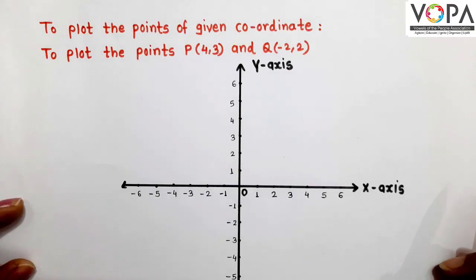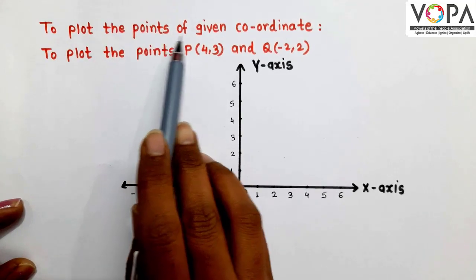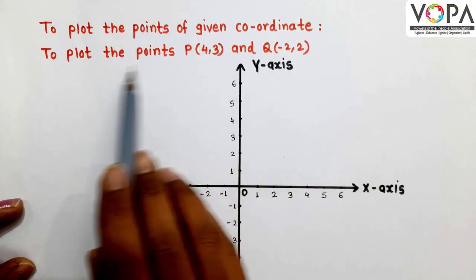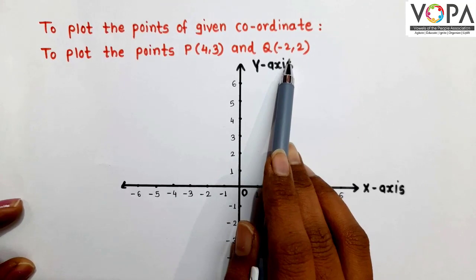Dear student, now we shall learn how to plot the points of given coordinates. Suppose we have to plot the point P(4,3) and Q(-2,2).